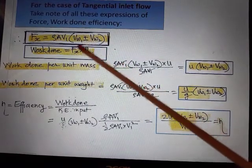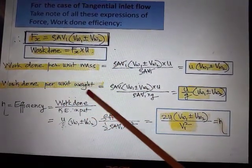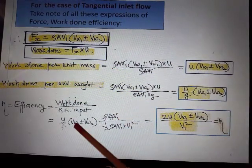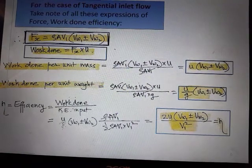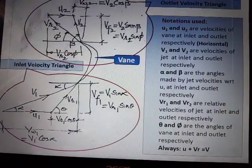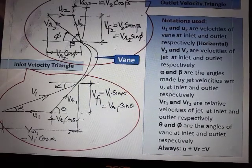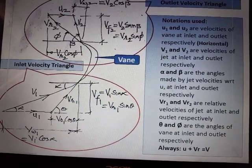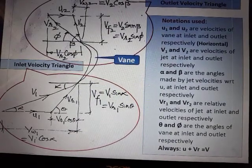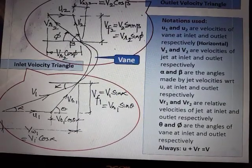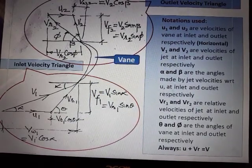Then this slide gives the final step like how much is the force that is acting on the vane, what is work done, work done per unit mass, work done per unit weight expressions, and efficiency. And so these slides will be once again explaining the inlet and outlet velocity triangles which we have already studied, so will not be spending much time on these slides but for reference I have kept them here.